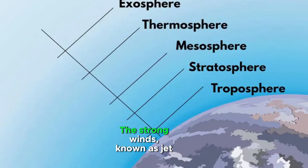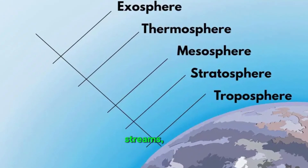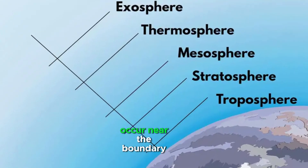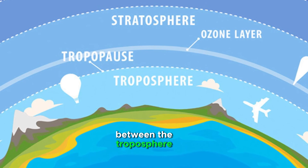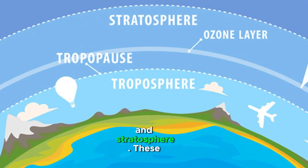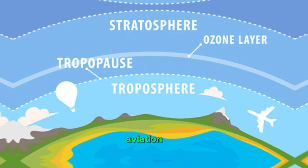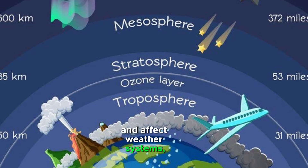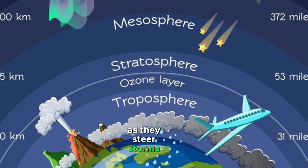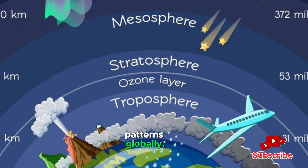The strong winds, known as jet streams, occur near the boundary between the troposphere and stratosphere. These winds are important for aviation and affect weather systems, as they steer storms and influence weather patterns globally.